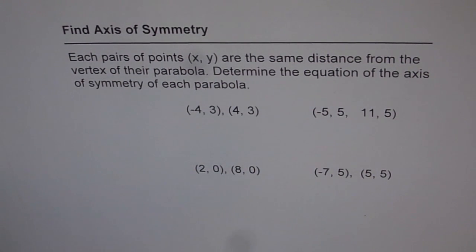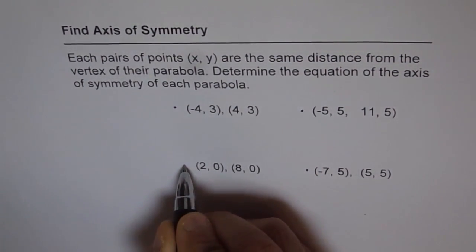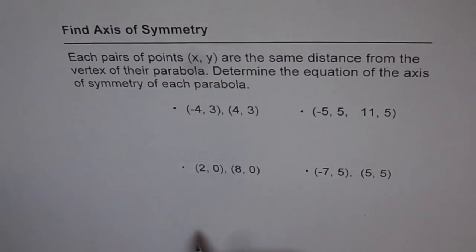So we are given here 4 sets of points. These are the 4 sets of points. We need to find axis of symmetry for the given parabola.